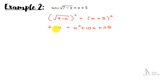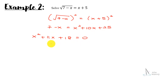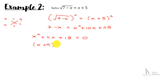Bringing everything to the right-hand side: x squared plus 11x plus 18 equals 0. Factorizing completely gives x plus 9 times x plus 2 equal to 0.